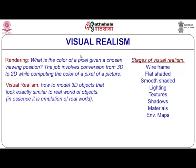What is rendering? We compute the color of a pixel given a chosen viewing position. Imagine a 3D world with a collection of objects — we choose a position and orientation and determine how the world appears from there. Just as in the real world our view depends on where we stand and how we orient ourselves, we imitate this in the 3D simulated world. Visual realism is how to model 3D objects that look exactly similar to real-world objects — it is simulation of the real world.